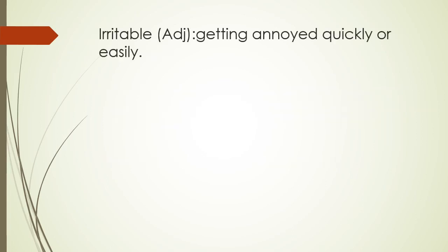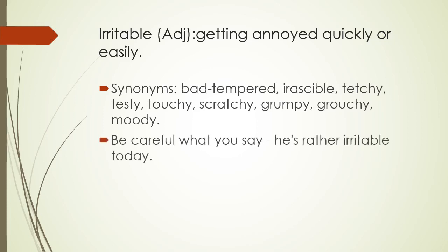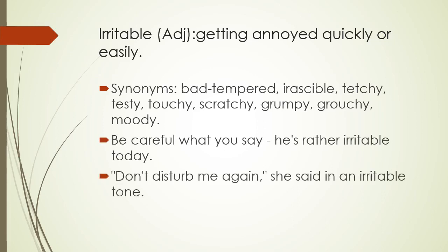Next word is 'irritable.' It's an adjective. It means getting annoyed quickly or easily. In Urdu it means tund mizaj, tez mizaj, or bad mizaj. Synonyms: bad-tempered, irascible, touchy, testy, scratchy, grumpy, grouchy, and moody. Examples: Be careful what you say — he is rather irritable today. Don't disturb me again, she said in an irritable tone.